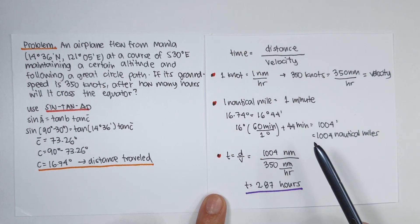Last is that time is equal to distance divided by velocity. So that is equal to 1,004 nautical miles divided by 350 nautical miles per hour. So cancel the nautical miles. And solving for time, we get 2.87 hours.